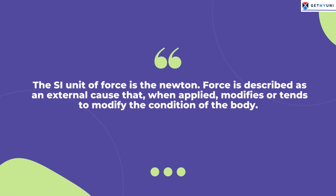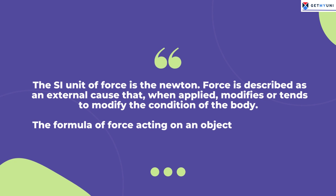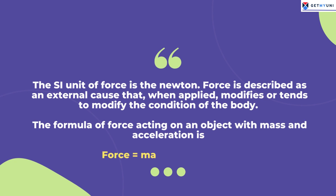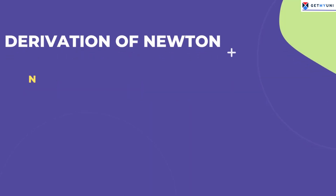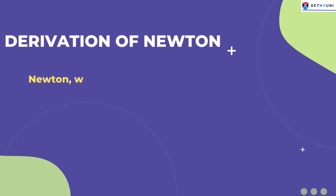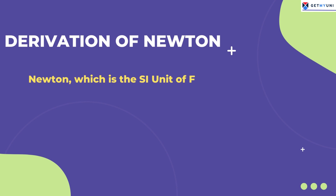The formula of force acting on an object with mass and acceleration is: force is equal to mass multiplied by acceleration. Now let's discuss the derivation of the SI unit of force, Newton.